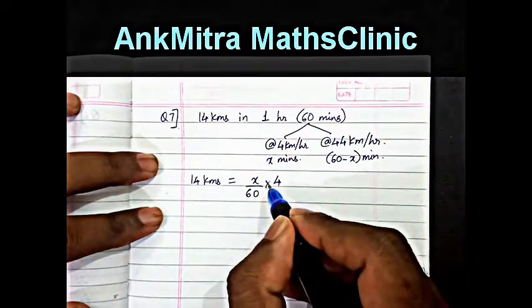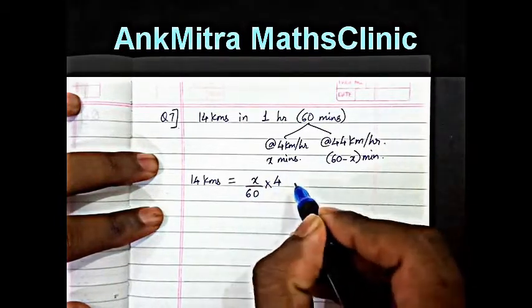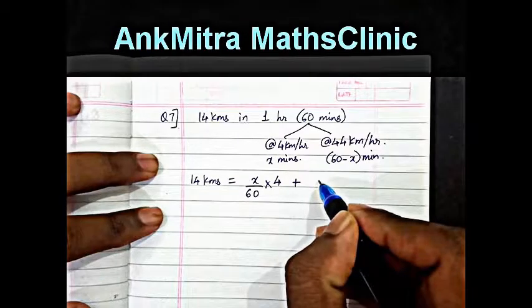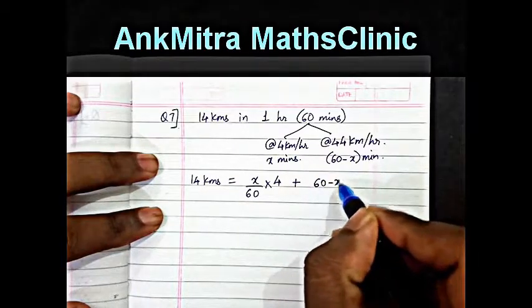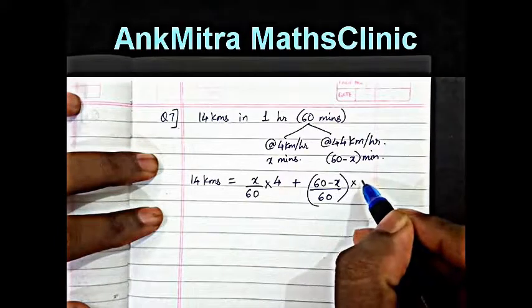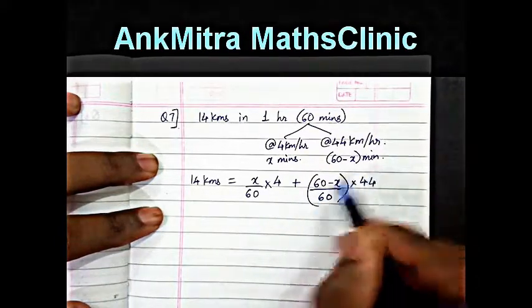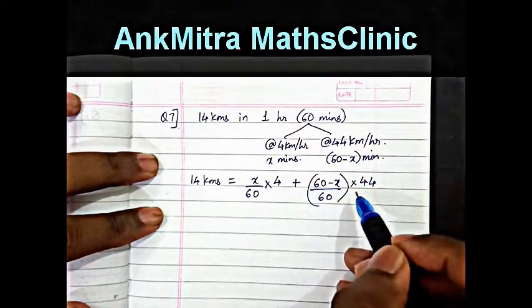This is time multiplied by speed, which gives the distance that the man walked, plus 60 minus x upon 60 hours multiplied by 44, which is the distance that the man travelled on scooter.